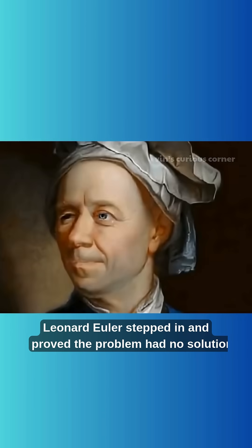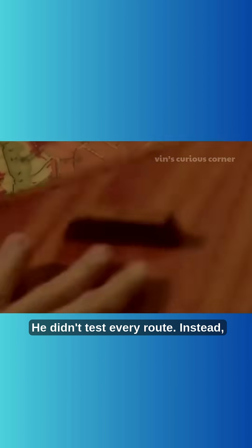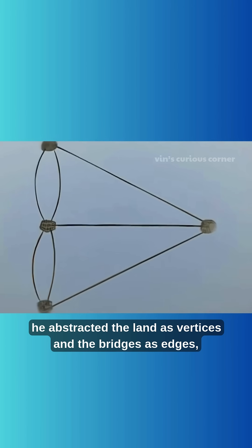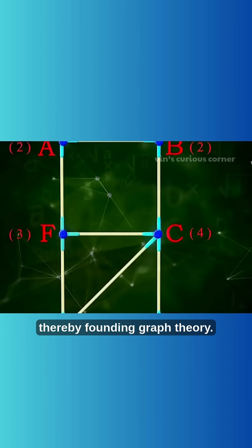Finally, Leonard Euler stepped in and proved the problem had no solution. He didn't test every route. Instead, he abstracted the land as vertices and the bridges as edges, thereby founding graph theory.